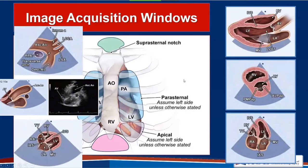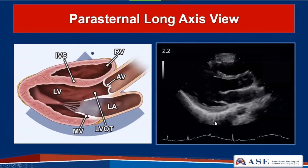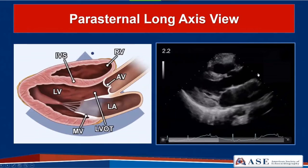For the parasternal window, the patient starts in the left lateral decubitus position with the index marker towards the patient's right shoulder. The starting view is the parasternal long axis view, in which we see the left atrium, mitral valve, left ventricle, LVOT, aortic valve, ascending aorta, and the right ventricle.